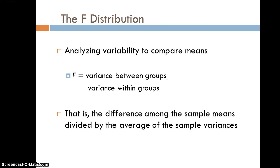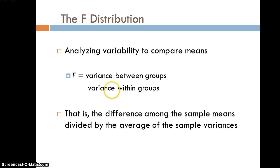With the F-distribution, we're looking at separating out the sources of variability that happen when you compare different group means. The F-statistic is the ratio of the variance between groups divided by the variance within groups. The variance between groups represents how much of the differences in the means is due to actual differences among those groups. For example, with three treatment groups — a control group, a standard treatment, and a new treatment.